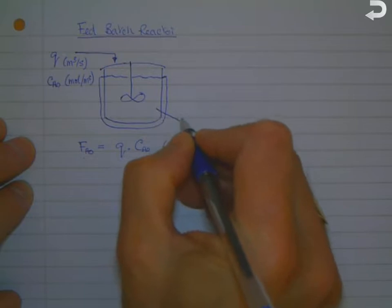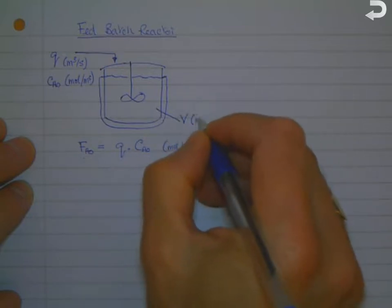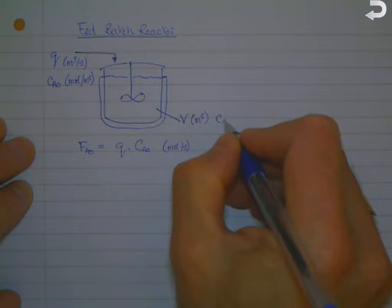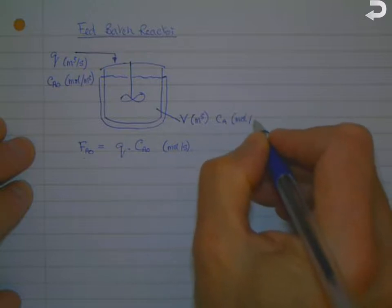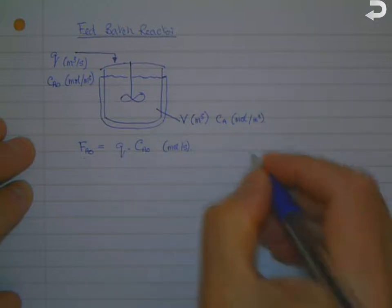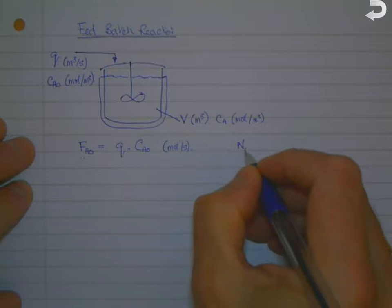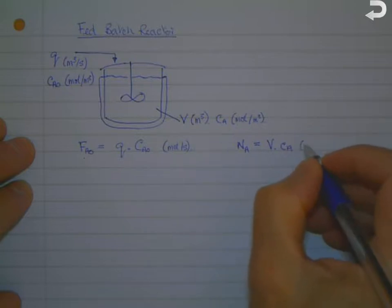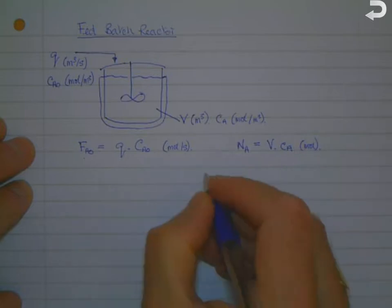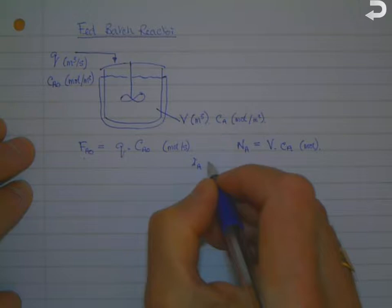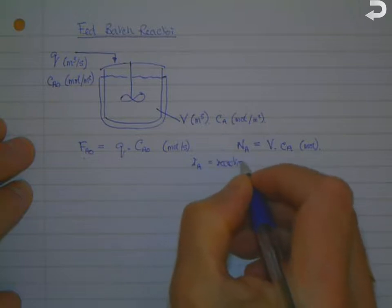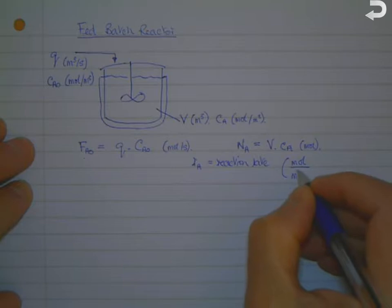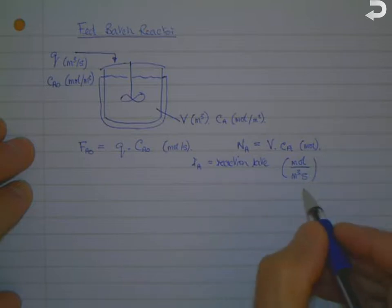The vessel at any given time has a volume V cubic meters, which varies with time because we're doing the addition throughout. At any given time we have a concentration of A in the reactor of Ca moles per cubic meter. The number of moles of A at any given time is equal to V times Ca, in moles. We also define the reaction rate of A, ra, in moles per cubic meter per second. If A is being consumed, ra is negative; for a product it would be positive.